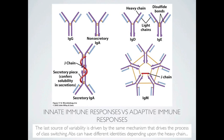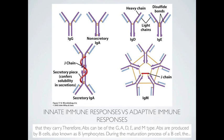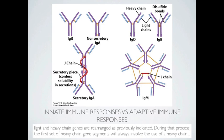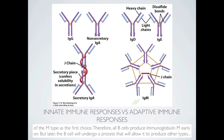The last source of variability is driven by the same mechanism that drives class switching. Antibodies can have different identities depending upon the heavy chain they carry — antibodies can be of the G, A, D, E, or M type. Antibodies are produced by B lymphocytes. During the maturation of a B cell, the light and heavy chain genes are rearranged as previously indicated. During that process, the first heavy chain gene segments will always involve a heavy chain of the M type, so all B cells produce immunoglobulin M early on.